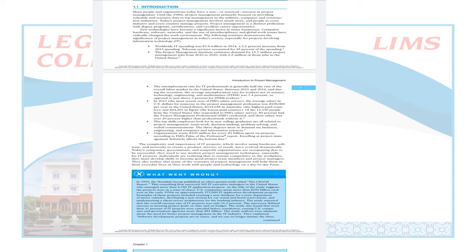Telecom services were also given as an example. Then: the unemployment rate for IT professionals is generally half the rate of the overall labor market, because IT has the possibility to execute different projects correctly. These different statistics are given in order to make you understand what world trends are going on and what IT project management is — in order to move on to the proper definition.